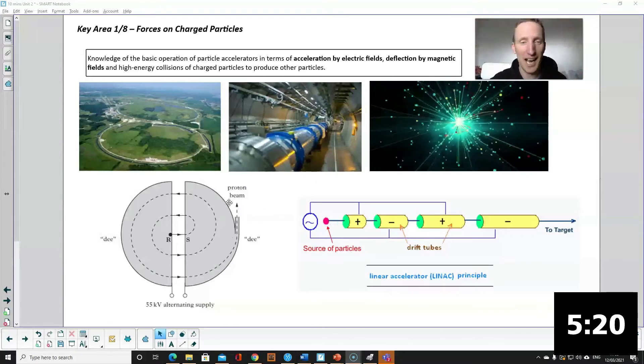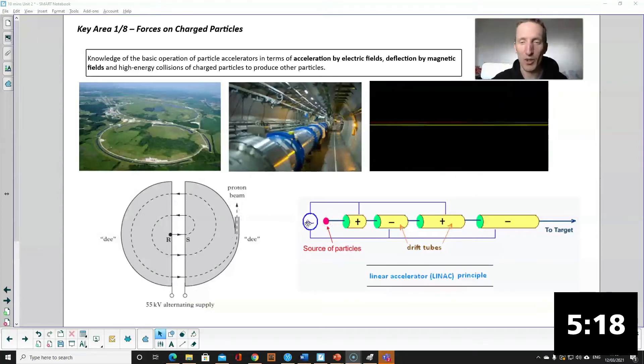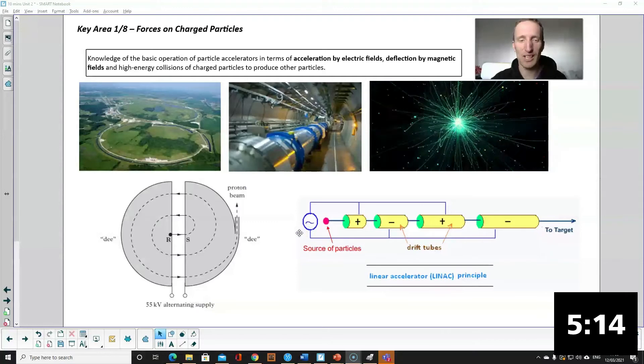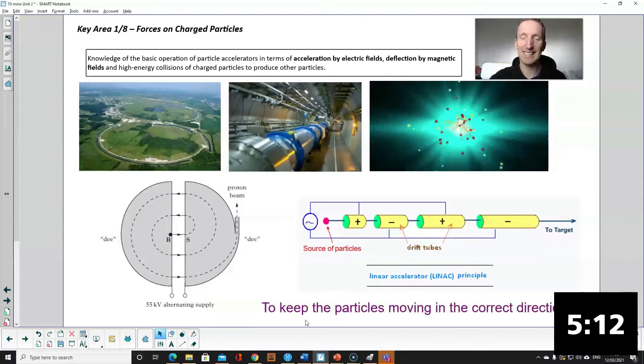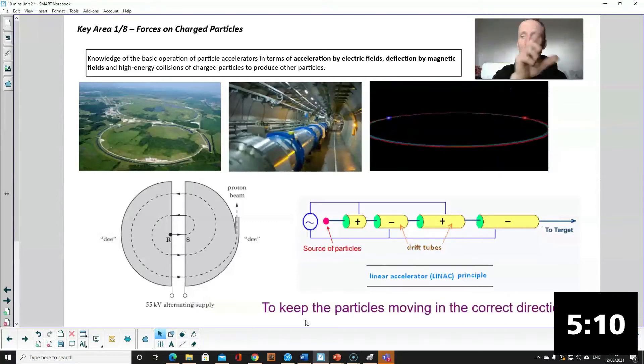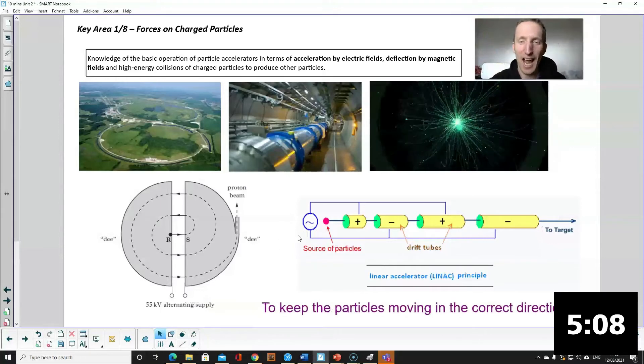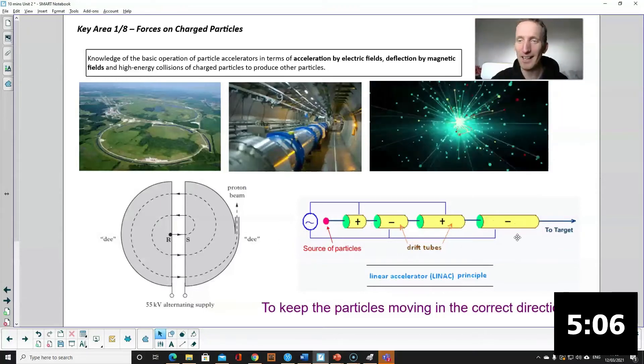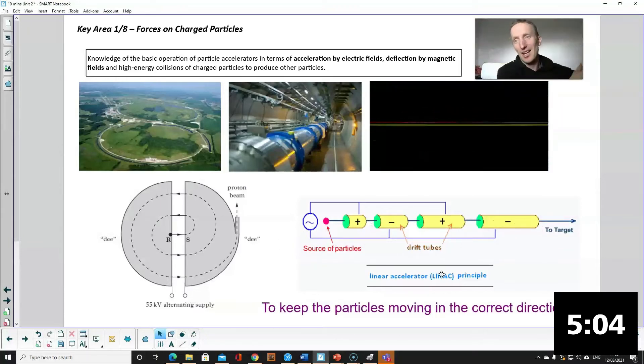Two favorites from the SQA you have what's called a cyclotron or a linear accelerator. Both of these use an alternating voltage and the reason for that is to keep the particles moving in the correct directions. And also you'll notice these tubes are getting bigger and that's just because the particles accelerating and getting faster as it travels along the accelerator.